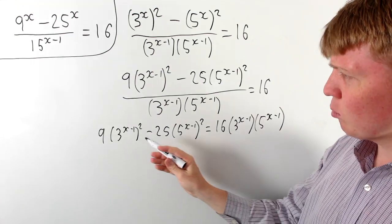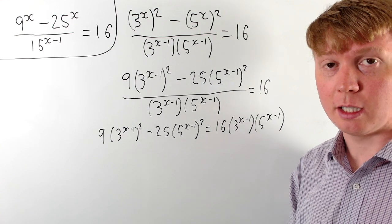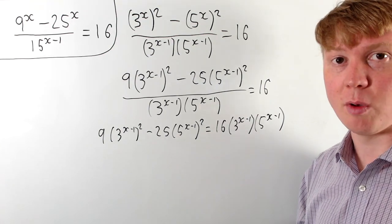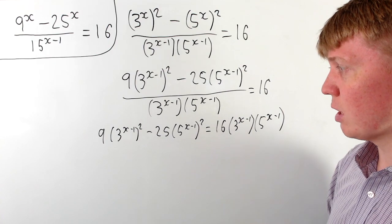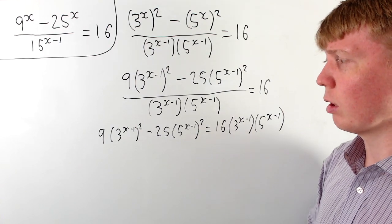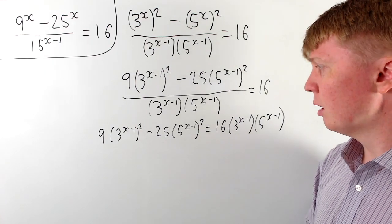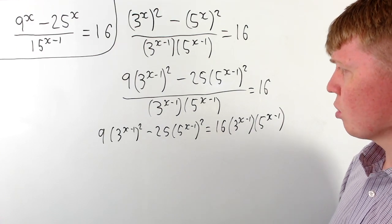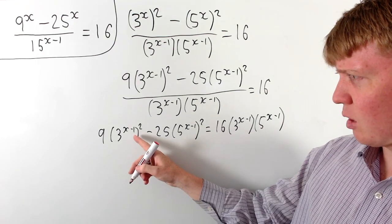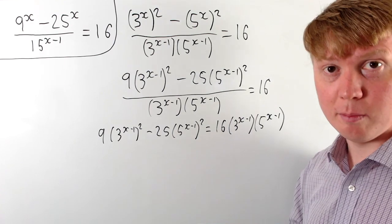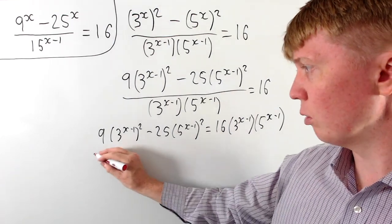Here we're seeing some structure that looks almost like a quadratic expression. We've got two variables at the moment: 3 to the x minus 1 and 5 to the x minus 1. But what if we were to divide through by 5 to the x minus 1 all squared? This could allow us to have 3 to the x minus 1 divided by 5 to the x minus 1 and perhaps get a single variable.